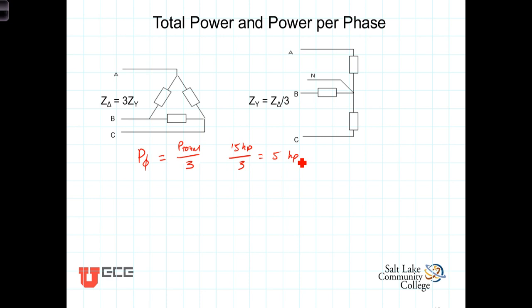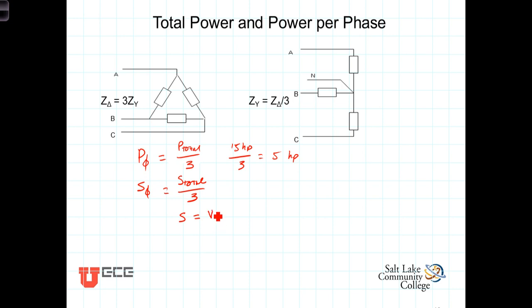Similarly, if we're talking about complex power, the complex power per phase is just equal to the total complex power divided by three. This applies whether we have a delta connected load or a Y connected load. We just have to be careful about which voltages and currents we use. In general, S equals phasor V times phasor I conjugate — but which V and which I?